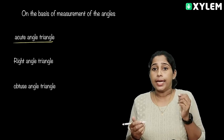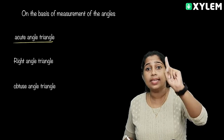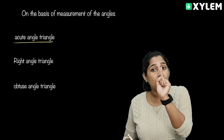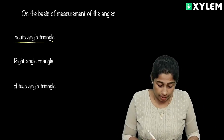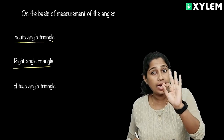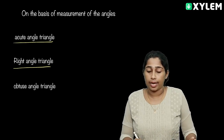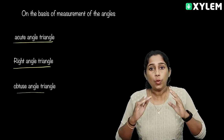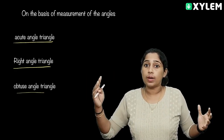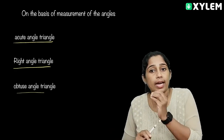In a right angle triangle, one angle is 90 degrees. If one angle is a right angle, we call it a right angle triangle. If an angle is greater than 90 degrees, we call it an obtuse angle triangle.